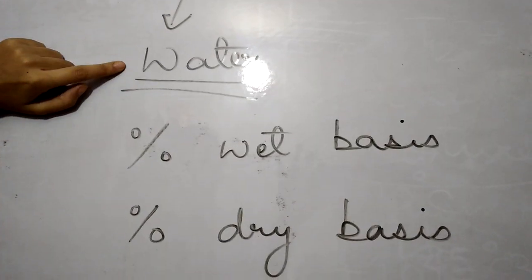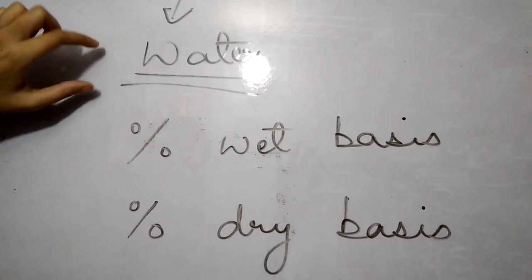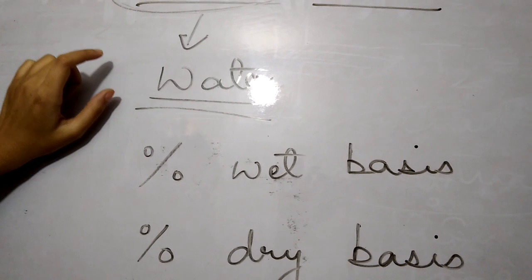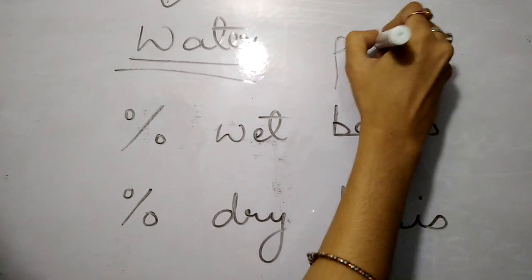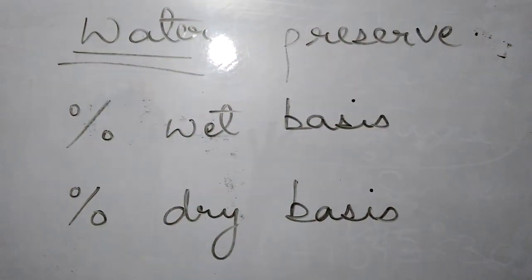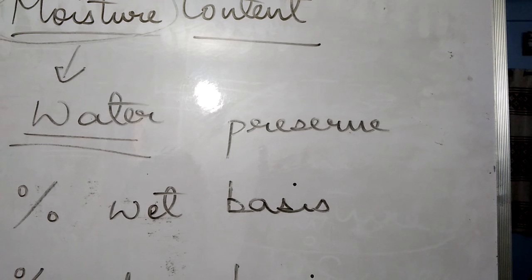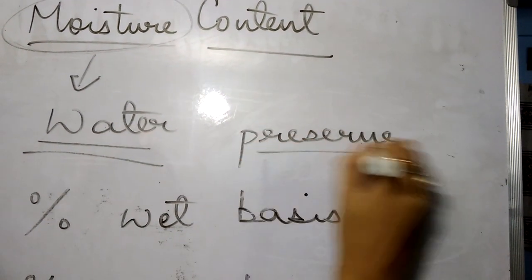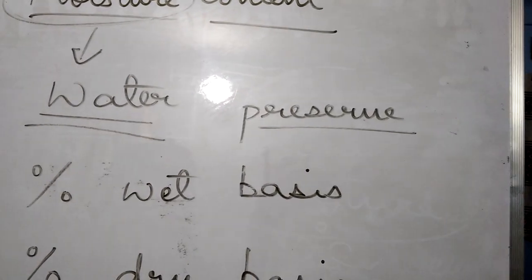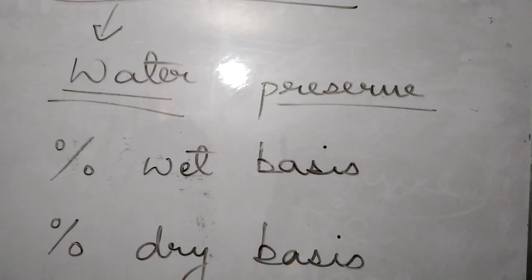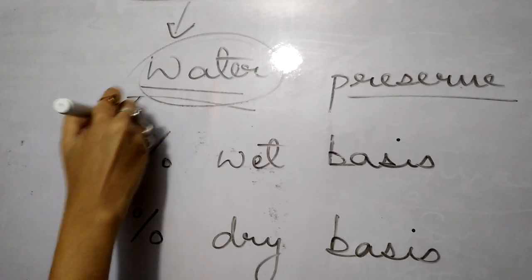Moisture content is the water content of a food sample. Why is it necessary to measure it? Because it decides the perishability of a food sample — how long you can preserve it. Jitna zyada water content hoga ek food sample mein, utni kam uski shelf life ho jayegi. Aur agar water content kam ho gaya, toh shelf life badh jayegi.